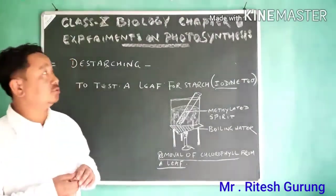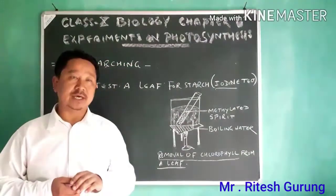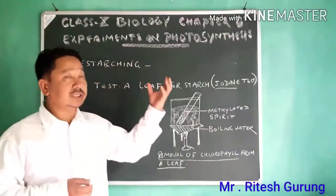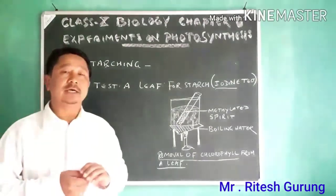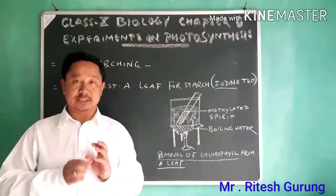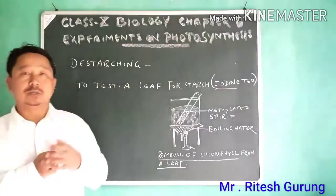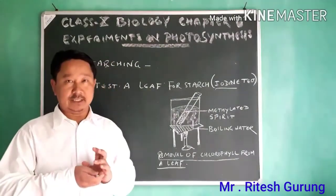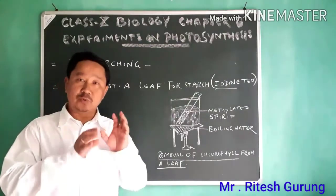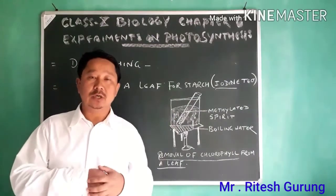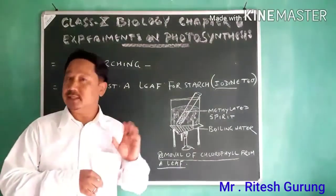Today in this session we will do experiments on photosynthesis to confirm and prove that the different components like carbon dioxide, chlorophyll, and sunlight are needed for photosynthesis — to prove whether it is true or not.